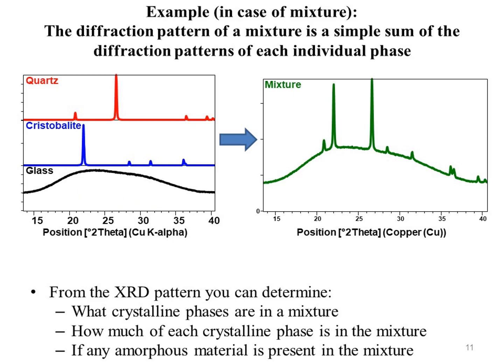Third example: the diffraction pattern of a mixture is a simple sum of the diffraction patterns of each individual phase. Using XRD patterns of a mixture you can determine what crystalline phases are present in the mixture, how much of each crystalline phase is present, and if any amorphous material is present in the mixture.